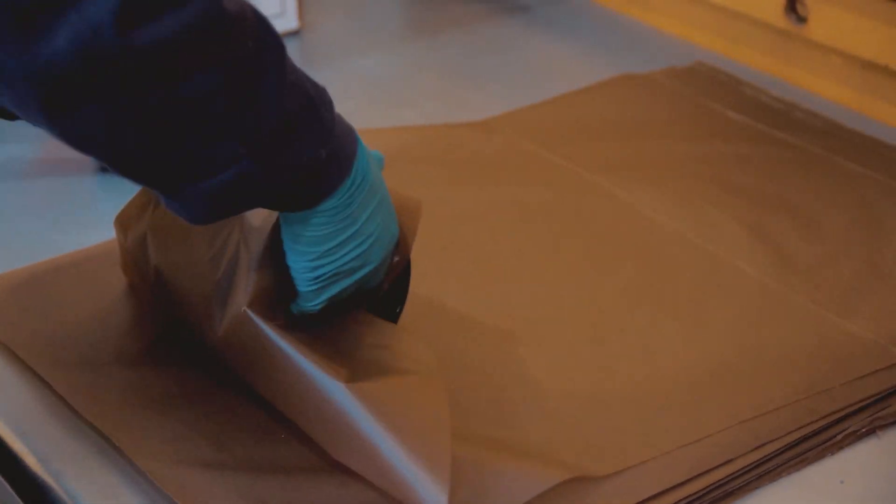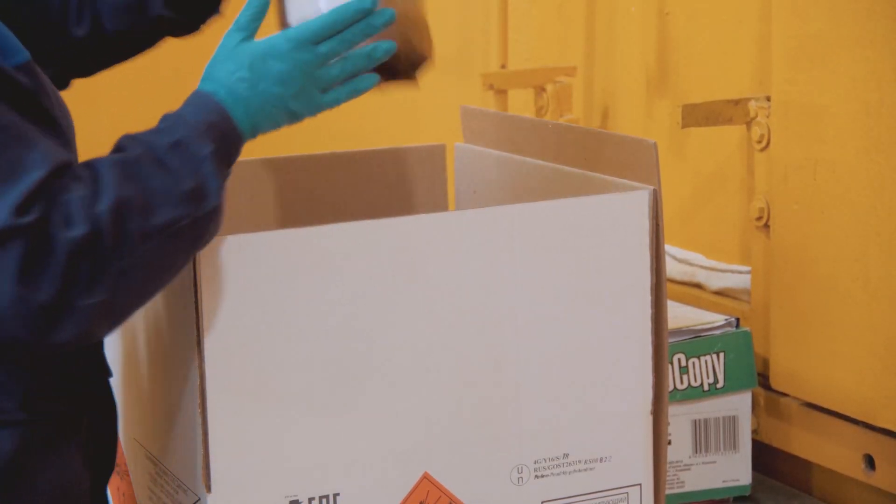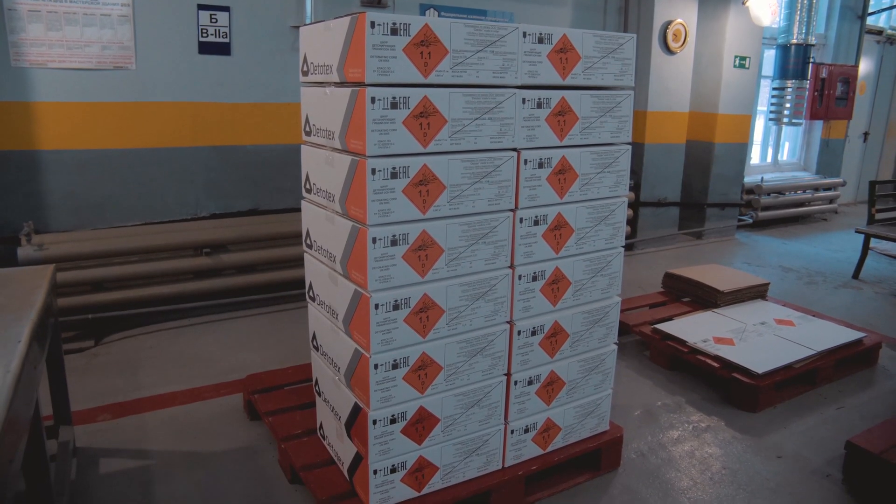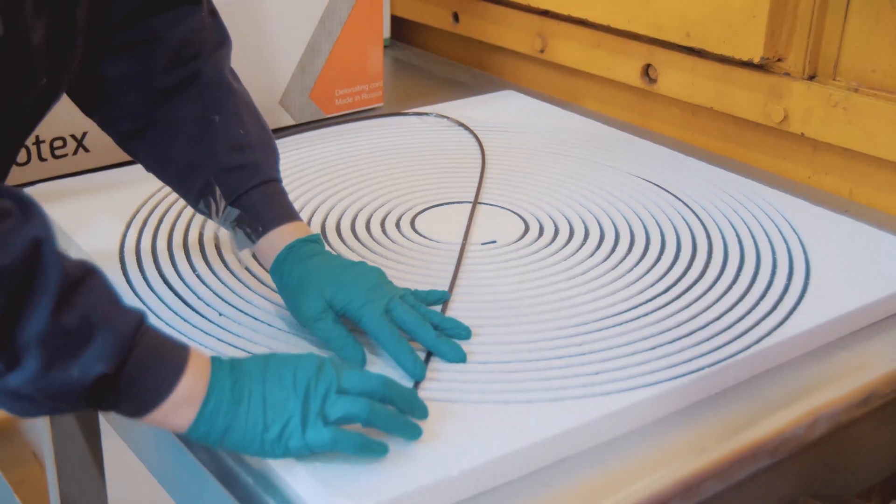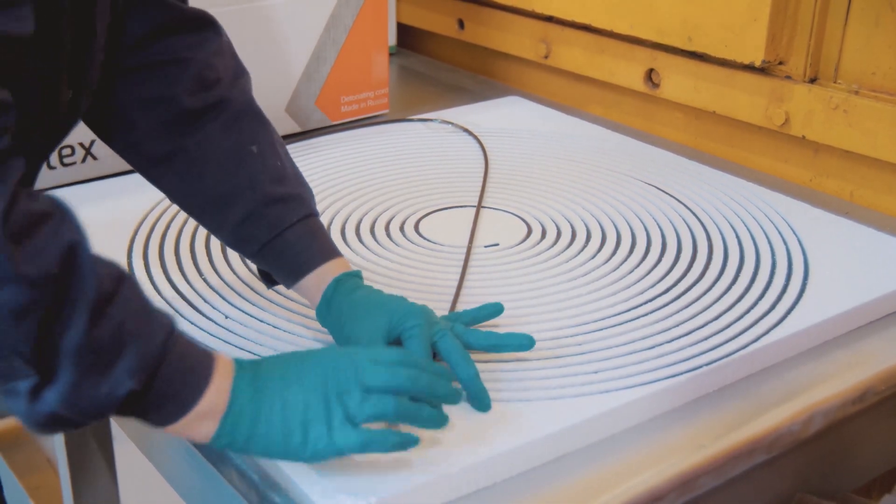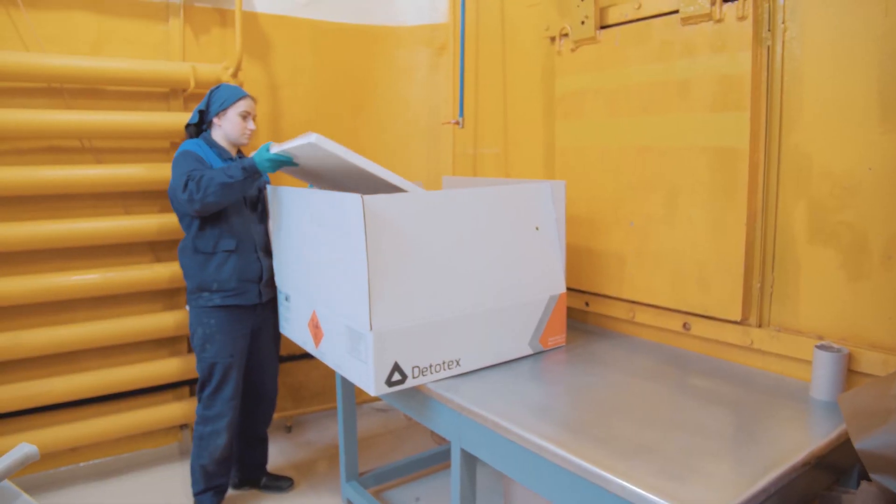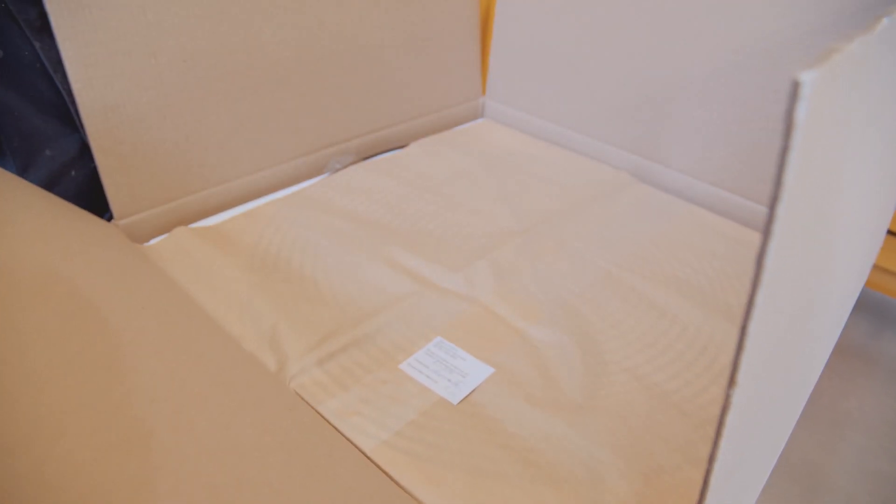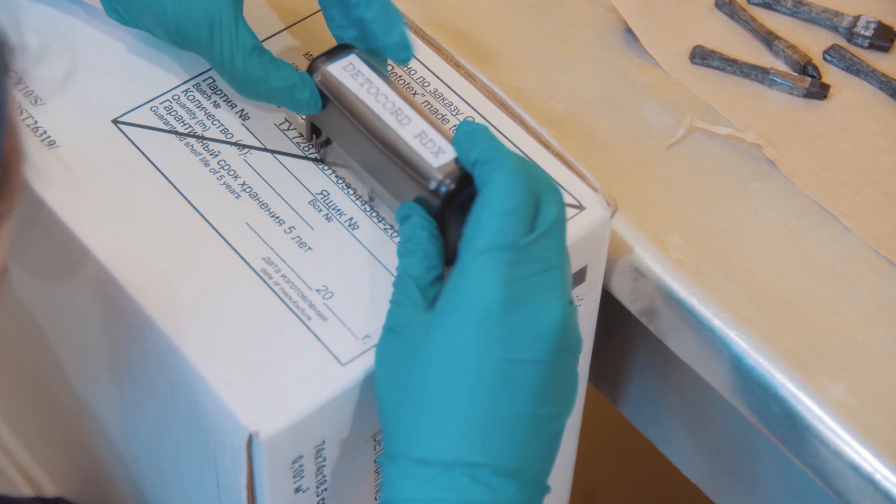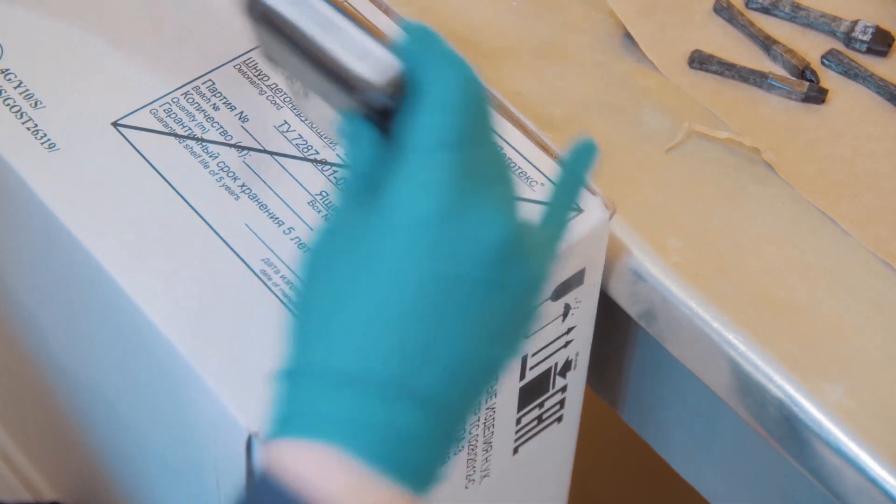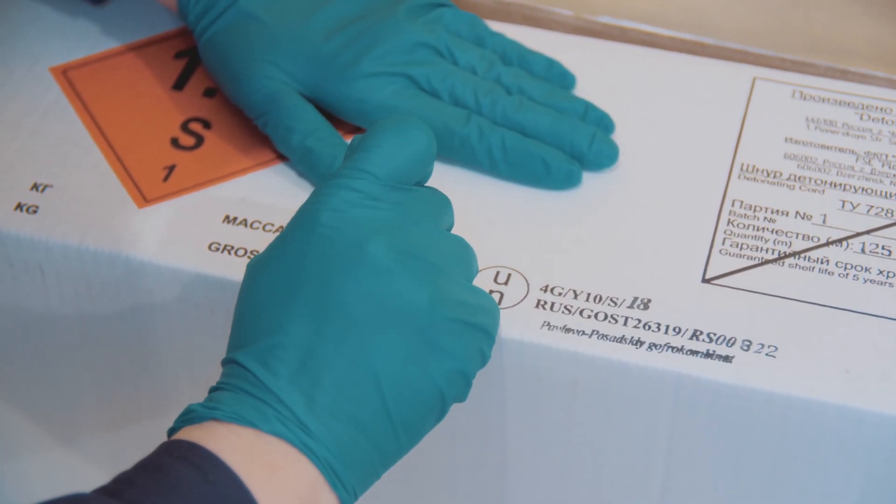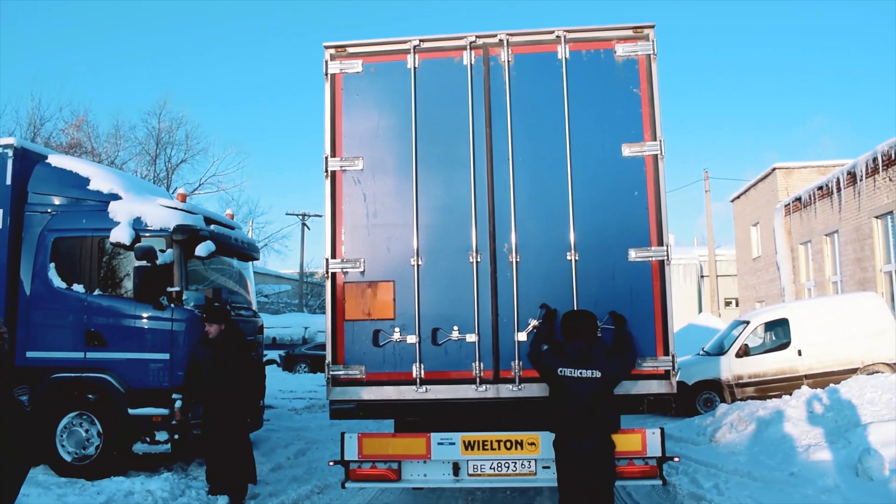Currently, there are two types of packaging for the detonating cord. 1.1D packaging contains 450 meters of detonating cord on 9 coils in a corrugated cardboard box. 1.4S packaging contains 125 meters of detonating cord on 5 layers in a corrugated cardboard box and allows shipping the detonating cord by any type of transport including passenger aircraft.